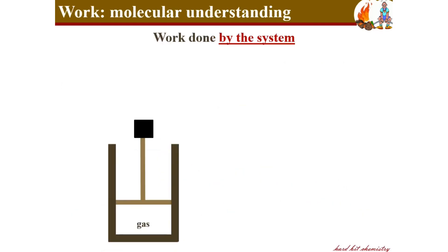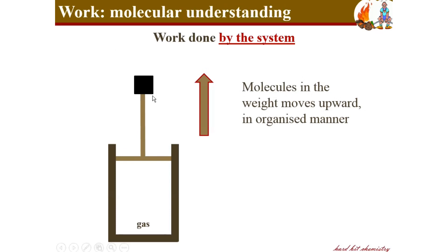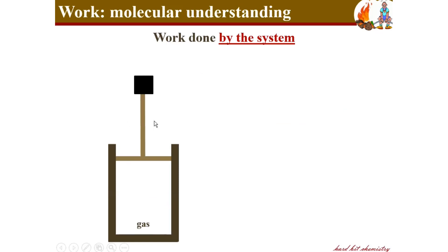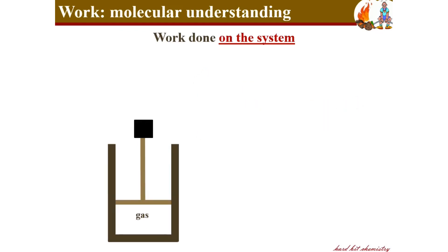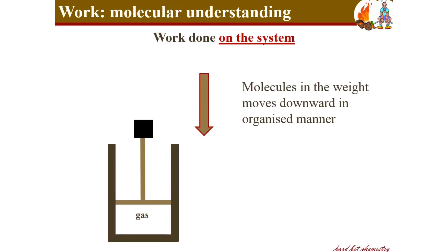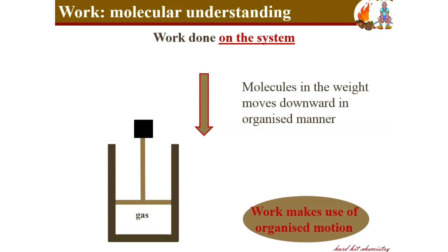Coming to work: consider work done by the system, like in an expansion. The weight is moving upward in a given direction — the molecules in the weight move upward in an organized manner. For work done on the system, the weight moves downward in an organized manner. So in work, the molecules of the weight move in a given direction — in an organized manner. Work makes use of organized motion. The most important conclusion is that heat addresses the random thermal motion of molecules, whereas work addresses the organized motion of molecules.